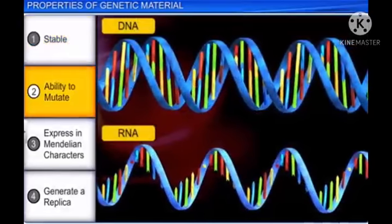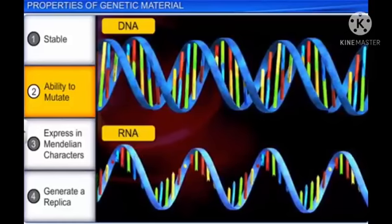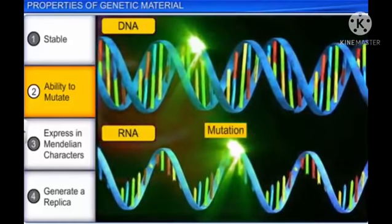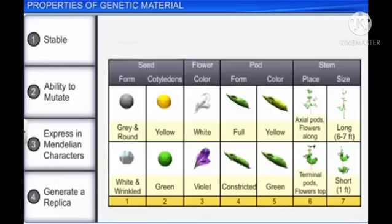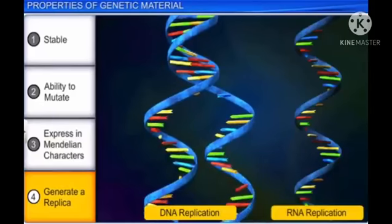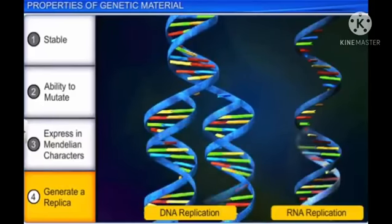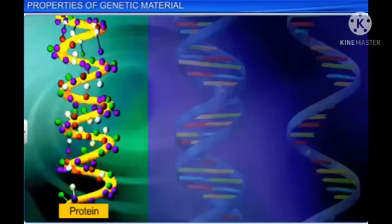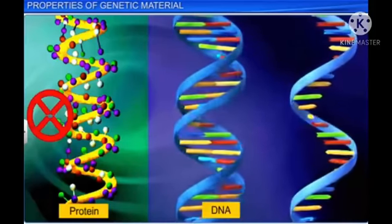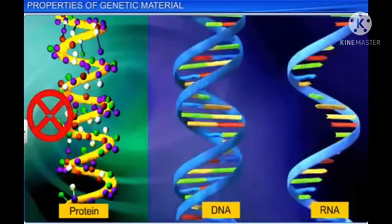Yet, despite stability, the molecule should provide scope for slow changes or mutation that is necessary for evolution. Further, the molecule should be able to express itself in Mendelian characters and also be able to generate its own replica to become a genetic material. Most biomolecules including proteins fail to fulfill these criteria, but both nucleic acids, DNA and RNA, meet all these requirements.